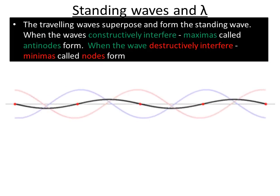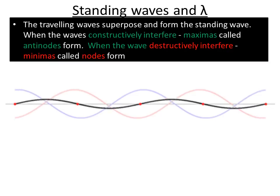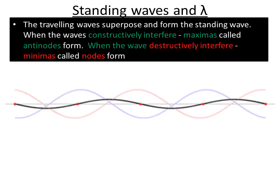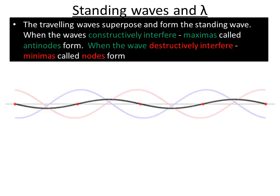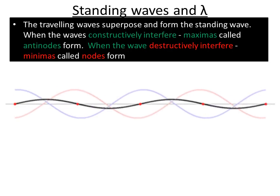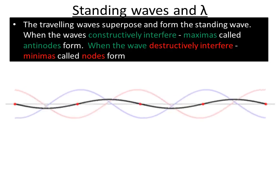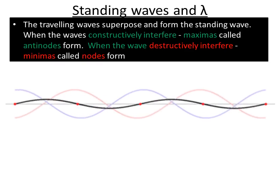So what we can see is the waves interfering constructively. If you look at the points where the black amplitude, the standing wave, jumps up, you'll see that the two waves meet peak to peak, interfering with each other. These maximas are called antinodes.